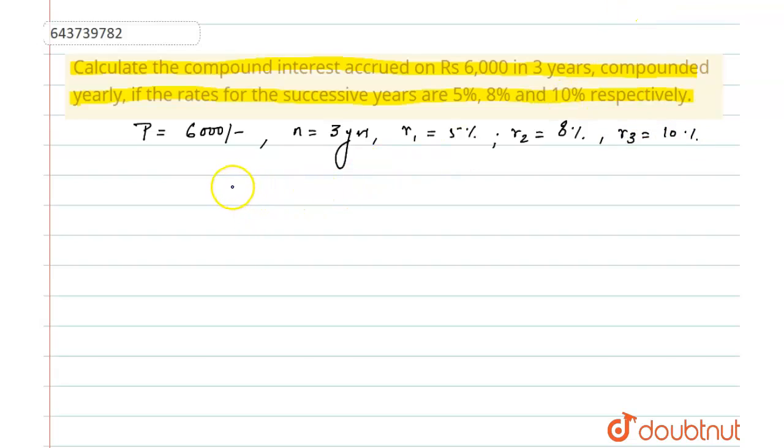So first we can calculate the amount. For the amount, the formula that we are going to use is P times (1 plus r1 by 100) times (1 plus r2 by 100) times (1 plus r3 by 100).